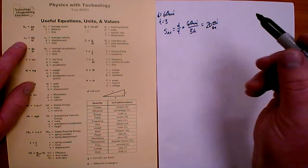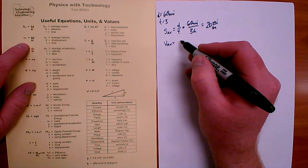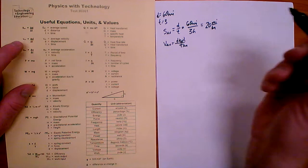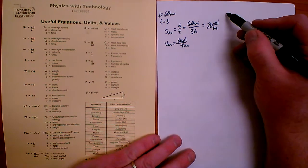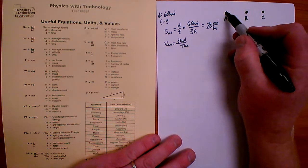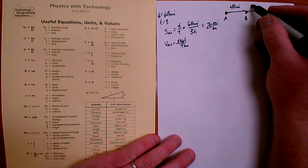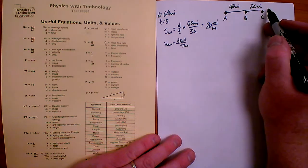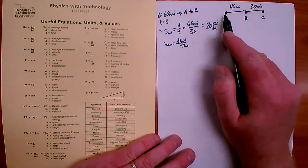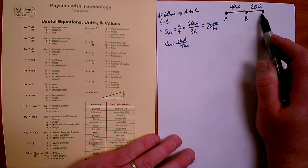Average velocity is equal to displacement over time. They use the same symbol delta D for both displacement and distance, so it's important to know the distinction. For example, if a car traveled from point A to B to C, where A to B is 40 miles and B to C is 20 miles, the distance from A to C is 60 miles.